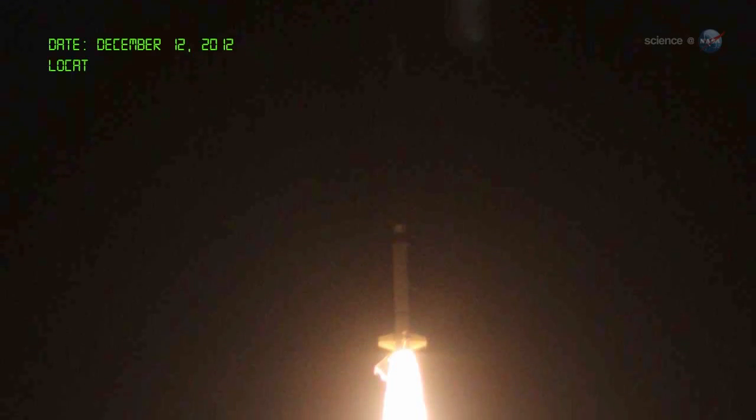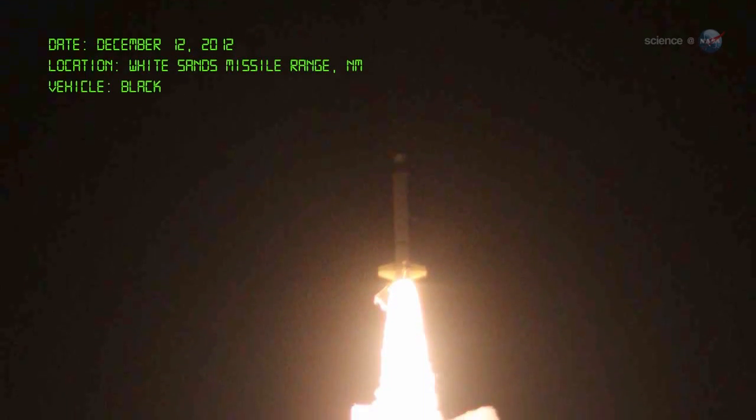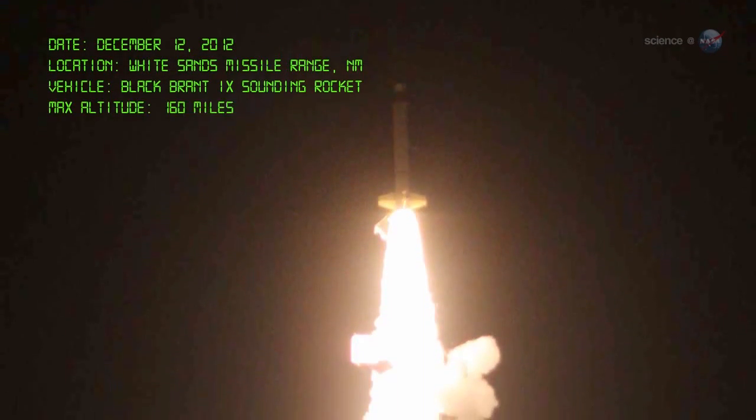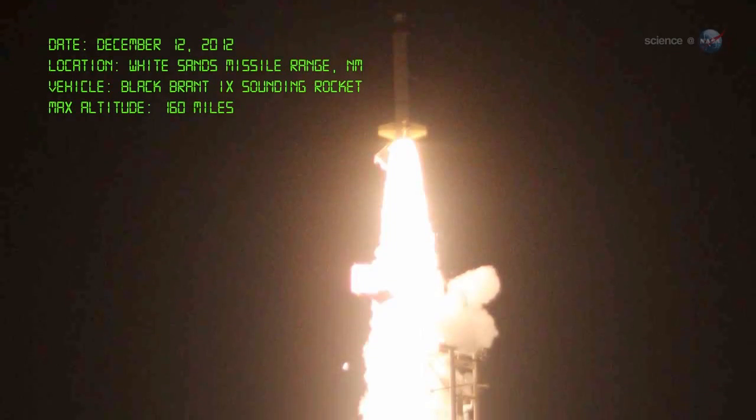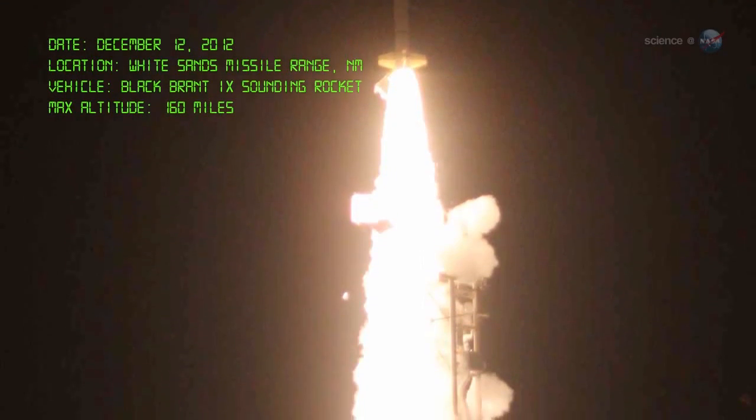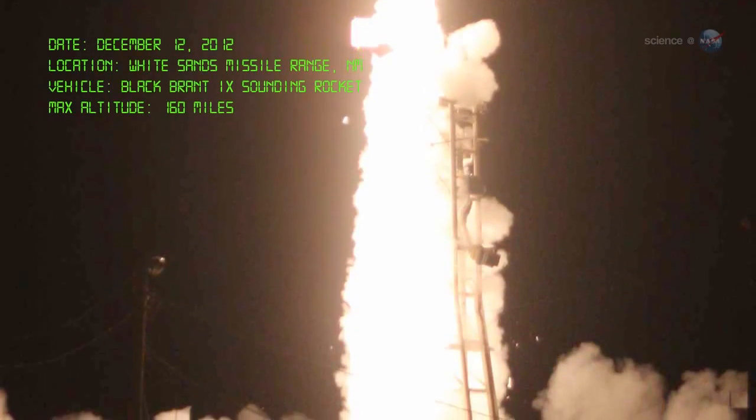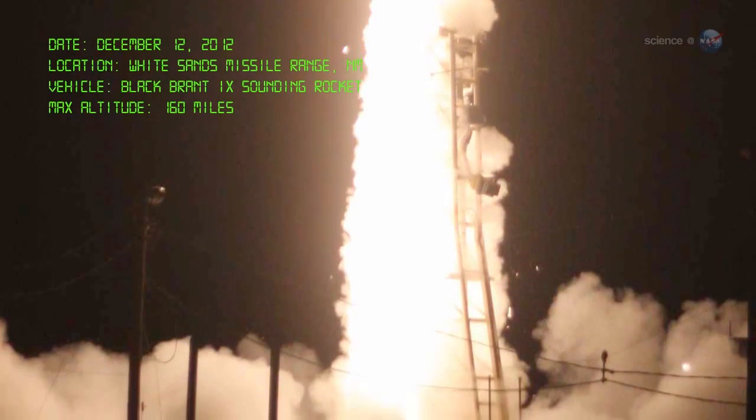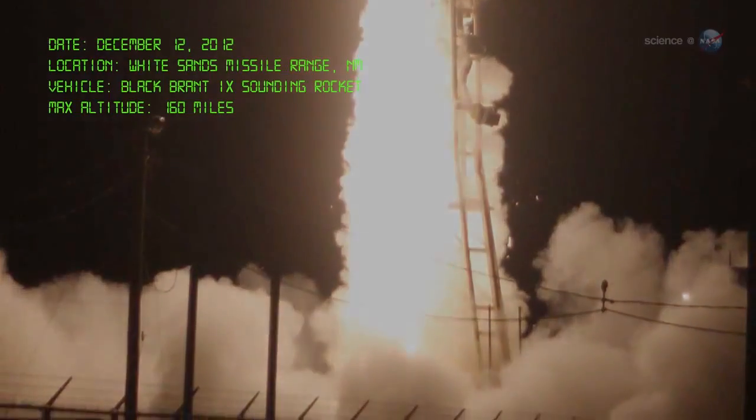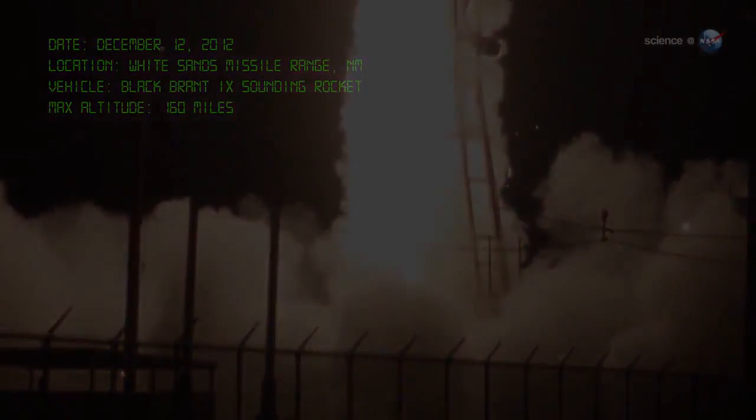On December 12, 2012, DXL launched from White Sands Missile Range in New Mexico atop a NASA Black Brant 9 sounding rocket, reaching a peak altitude of 160 miles and spending five minutes above the Earth's atmosphere. That was all the time they needed to measure the amount of charge exchange X-rays inside the solar system.